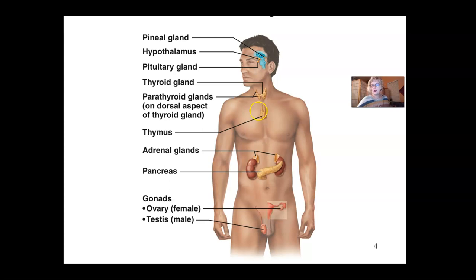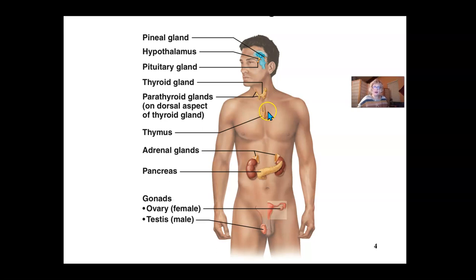The thymus is involved in immune system maturing of T cells. It is really large as an infant, designed to keep the infant alive as the immune system gets exposed to different viruses and bacteria. The thymus releases thymosine, which stimulates maturation of T cells. As you get older, the thymus gland diminishes in size; by age 65 and up, it turns to fat — this is why older people have a poorer immune system.